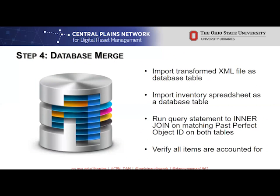Step 4: database merge. In this step, we import our two spreadsheets into a database and they become two tables. The first spreadsheet is the collection, which includes item records. The second spreadsheet is our inventory file. Once both tables are in the database, we then run a query statement that inner-joins the two tables by matching on the PastPerfect object identifiers. After running the query, what we get is a new table that has the file path merged with its corresponding metadata. This new table is what we will use for bulk ingest into the master objects repository.